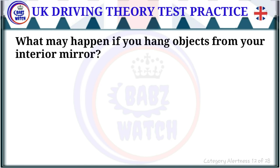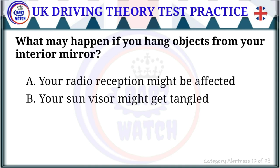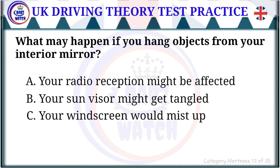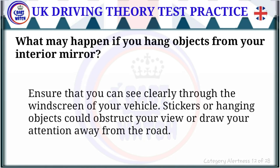Question 12 of 28: What may happen if you hang objects from your interior mirror? The correct answer is: your view could be obstructed. Ensure that you can see clearly through the windscreen. Stickers or hanging objects could obstruct your view or draw your attention away from the road.